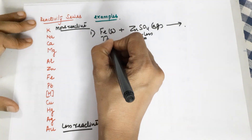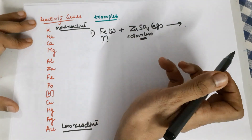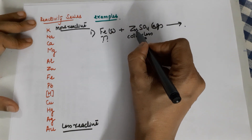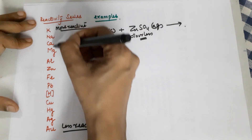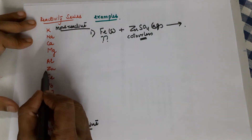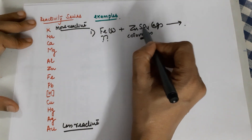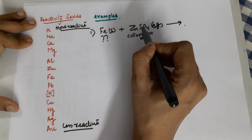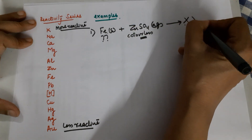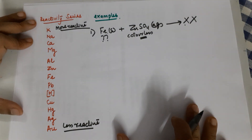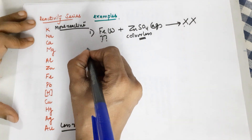It depends on whether iron is more reactive. Let's check the reactivity of zinc — zinc is above iron in the reactivity series, which means zinc is more reactive, which means the bond between zinc and sulfate is very strong and will not break. Because iron is less reactive than zinc, there will be no reaction, no displacement would happen.